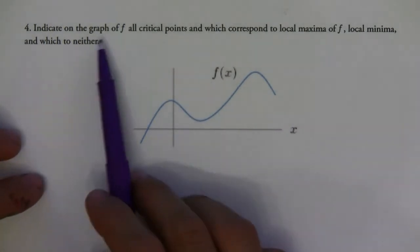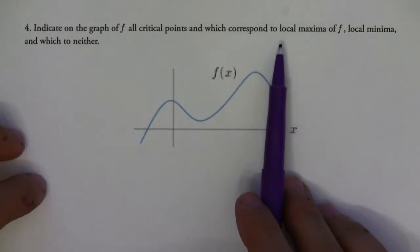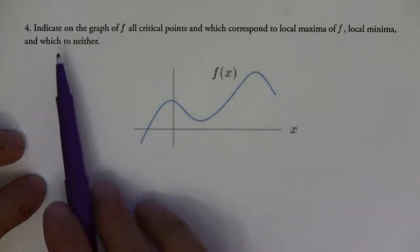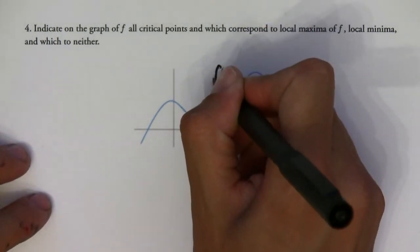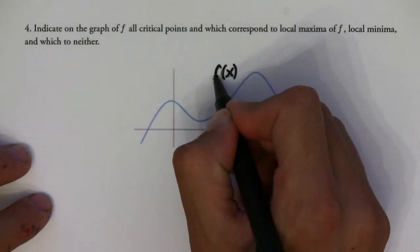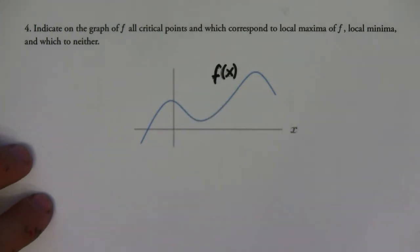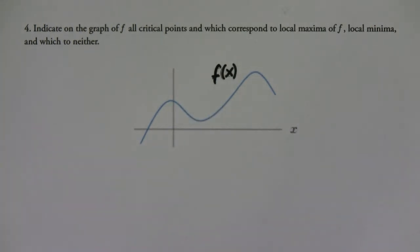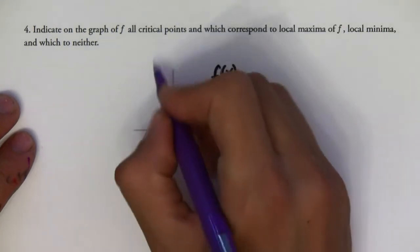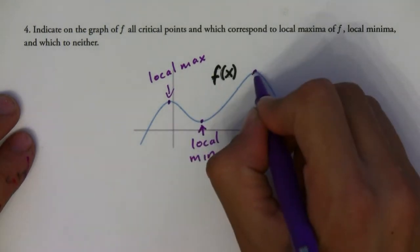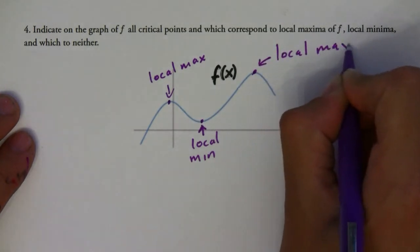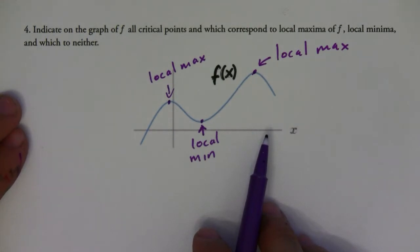This question asks us to indicate on the graph of f all critical points and which correspond to local maxima, local minima, and which to neither. This is f(x), the original function. Finding the critical points and local maximums and minimums is very straightforward — this would be a local maximum, this one is a local minimum, and this is a local maximum, and all three of these are also critical points.